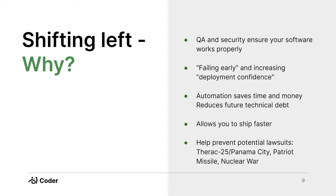While you're never going to catch everything, finding these things earlier allows us to reduce the later technical debt that builds up of potentially poorly written code that won't work with other integrations and other parts of the code base. Because we have this confidence that our code is at a higher quality — because we're able to find bugs and security issues earlier — this allows us to ship faster too.